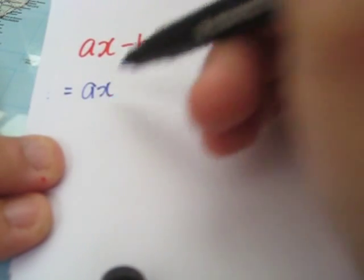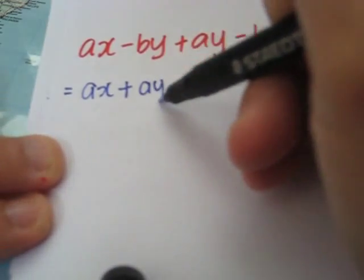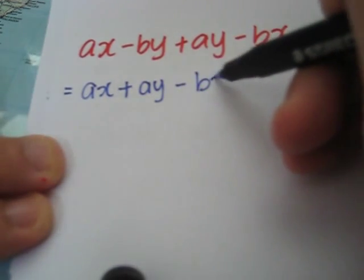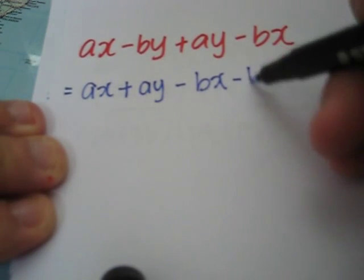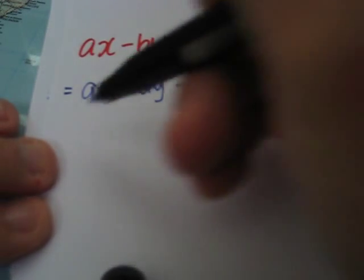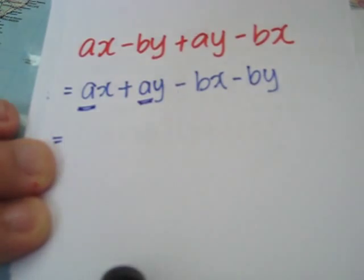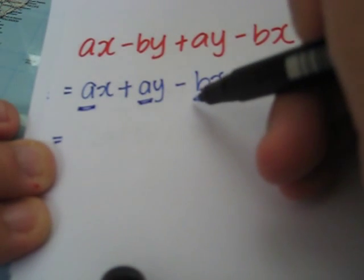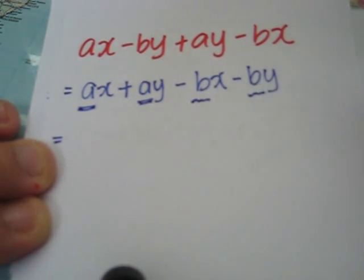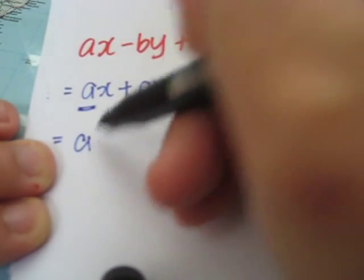We shall reorganize the terms so that it is more obvious to us where the common factors are. Now, this is the pair of common factors. Here it is. So, we get this.